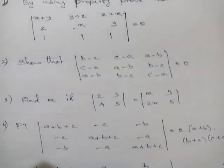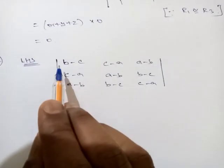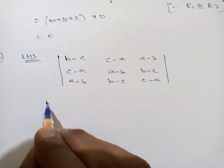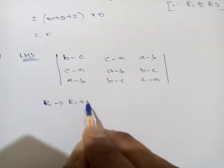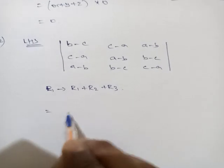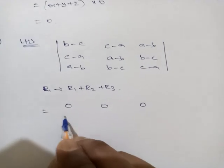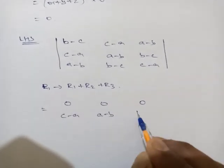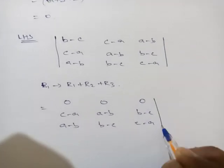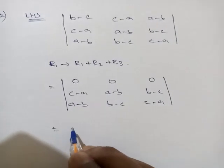That is what we are going to do. Apply r1 → r1 + r2 + r3. The first row becomes 0, 0, 0. Second row write as it is: c−a, a−b, b−c. Third row: a−b, b−c, c−a. Since one full row is 0, the determinant value is also 0.